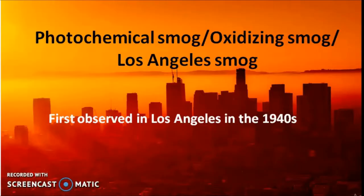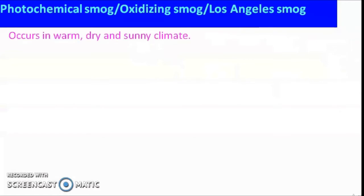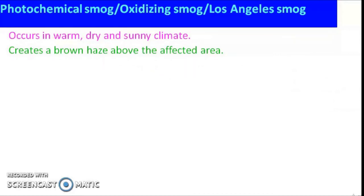Let us first talk about photochemical smog or Los Angeles smog, also called oxidizing smog. It was first observed in Los Angeles in 1940. Photochemical smog occurs in warm, dry and sunny climate. Unlike classical smog which happens in cold weather conditions, photochemical smog was observed during warm climate. It creates a brown haze above the affected area, while classical smog creates a grey haze.